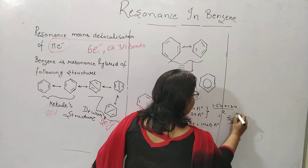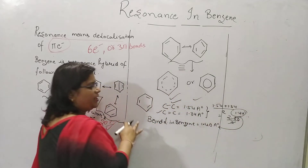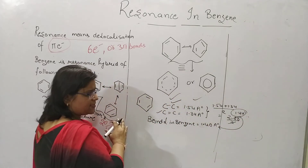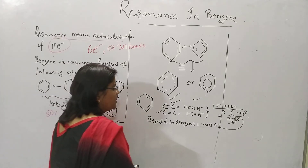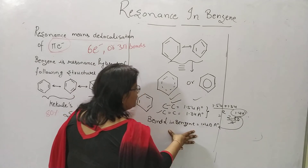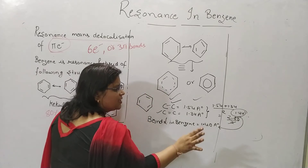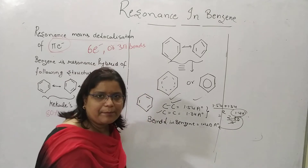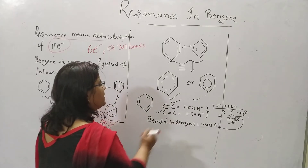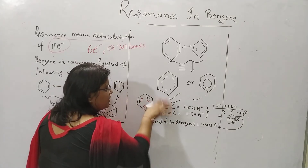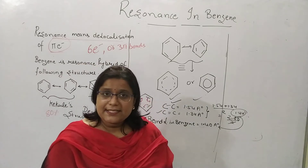The bond length of 1.40 angstrom proves that the benzene bond is neither completely single nor completely double, because the pi electrons are fully delocalized and encircle the whole ring.